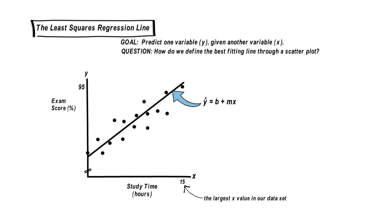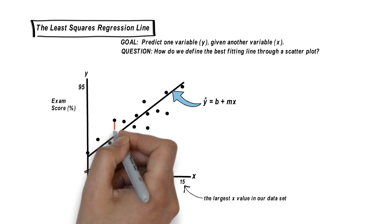Don't forget, we use y hat equals b plus mx. The hat, implying the y value, is an estimate. We're going to be interested in this distance right here.